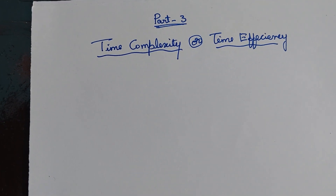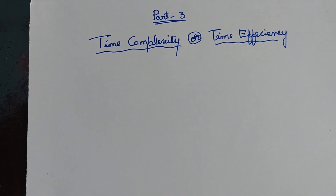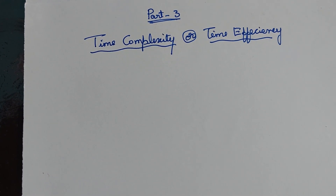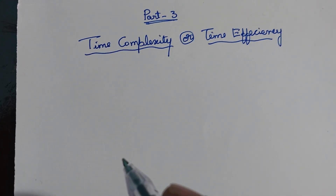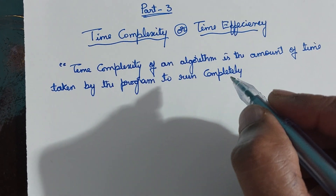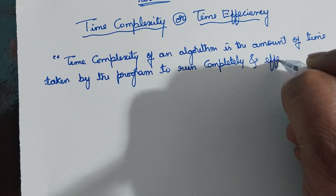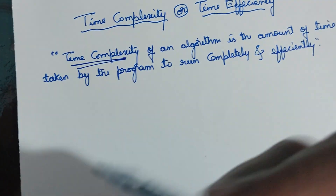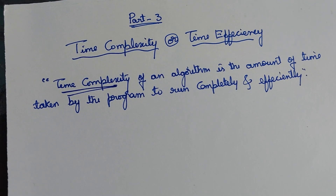Hi everyone. Today I am going to explain what you mean by time complexity or time efficiency. In the last video I explained about time complexity. Time complexity of an algorithm is the amount of time taken by the program to run completely and efficiently. Now we are going to discuss on what factors the time complexity depends.